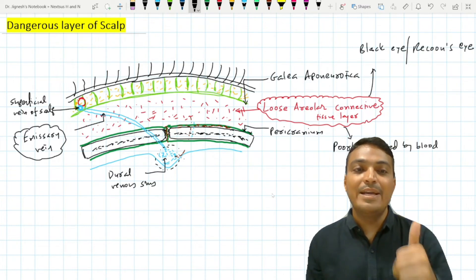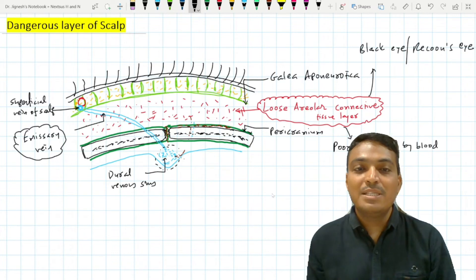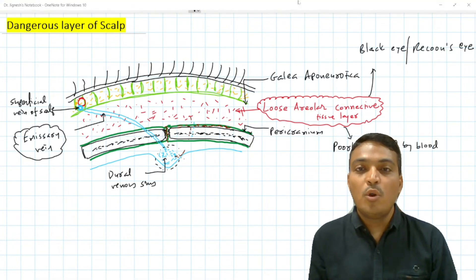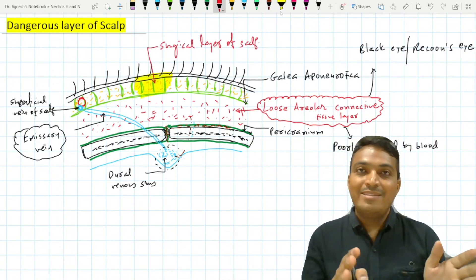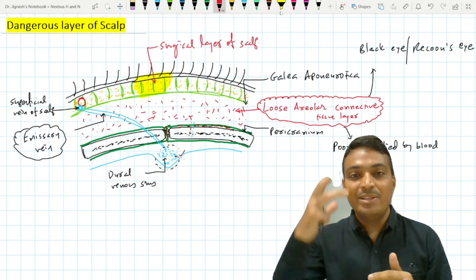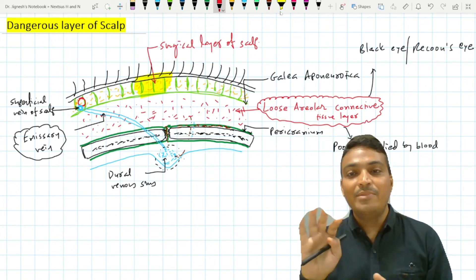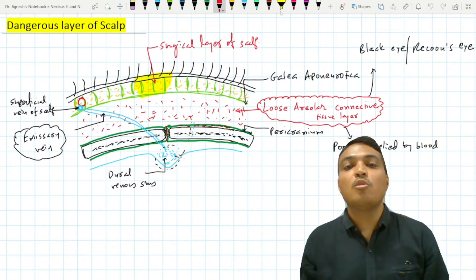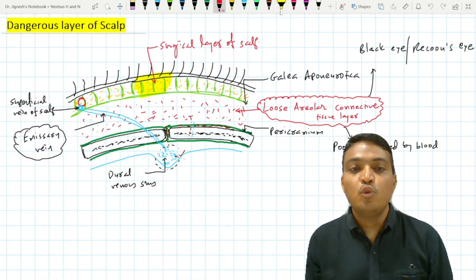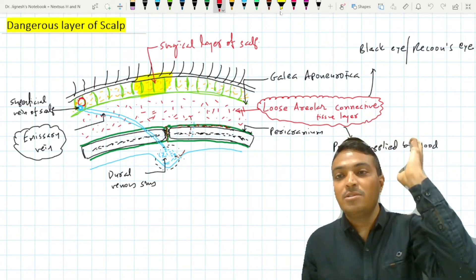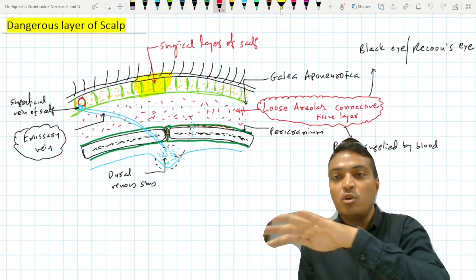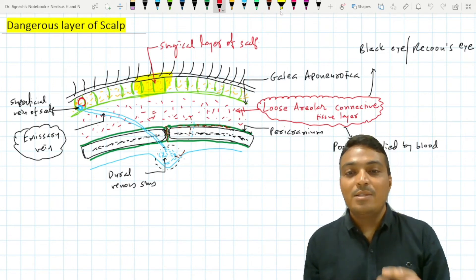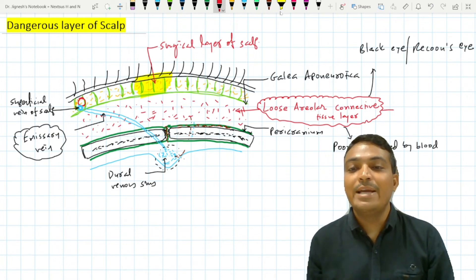The fourth reason is that the above three layers of the scalp — the skin, connective tissue, and galea aponeurotica — are called the surgical layers of the scalp. In avulsion of the scalp, which is most common when a lady with open hair works with rotating machinery and her hair gets caught, the avulsion occurs through this loose areolar connective tissue layer. The scalp is avulsed as the upper three layers, leaving only the skullcap with pericranium behind. This is why this layer is also called the dangerous layer.